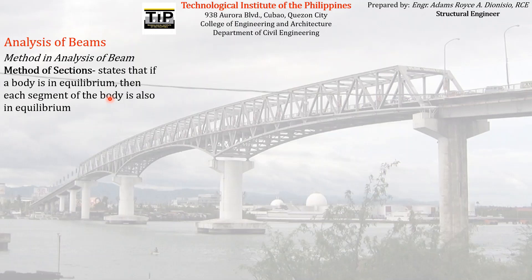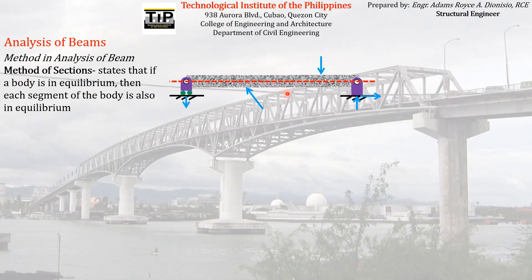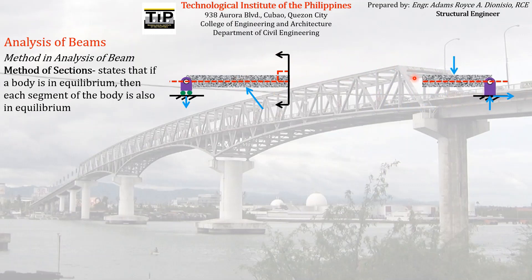This is the same definition as in the truss — I just replaced 'truss' with 'body.' So, what does the method of sections say? If we have a body or structure, say for example a beam, and we say that the beam is in equilibrium, then when we cut it into segments — say two segments — those two resulting segments must both be in equilibrium.